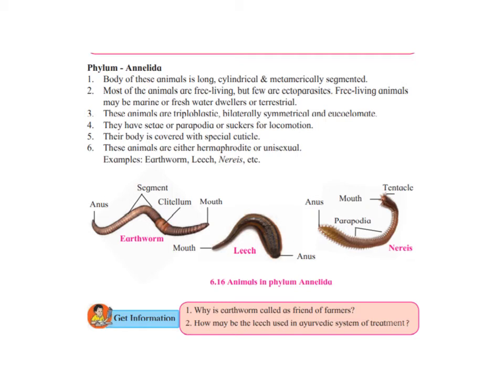Leech is an ectoparasite usually found in marshy lands during the rainy season. What leeches do is stick to the body — especially the legs — and keep sucking blood until they become very large and fall off. When they start sucking blood, we never feel any pain. Only after they fall off do we feel a scratching sensation. They mostly latch onto cattle when grazing, as cattle are unable to detect them.